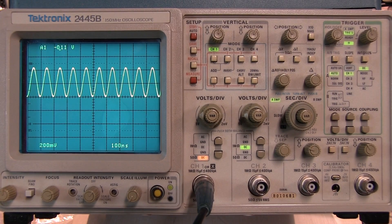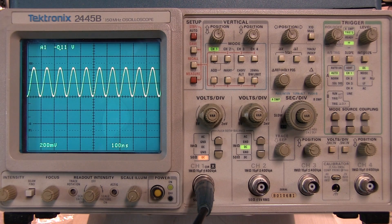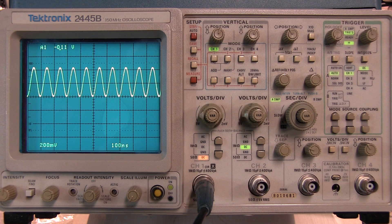In this video we're going to take a look at how to use the delayed time base in the Tektronix 2445. This also applies to the 2455, 65, and 67 series oscilloscopes.